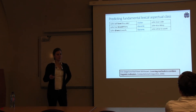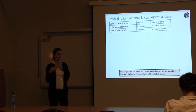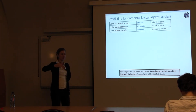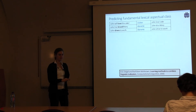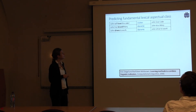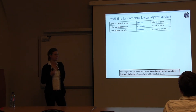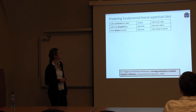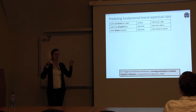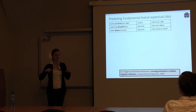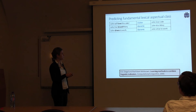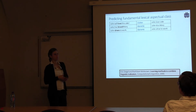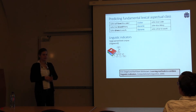Siegel and McKeown introduced the task of labeling fundamental lexical aspectual class. We predict the word-sense-level class: 'love' is stative. For dynamic cases, coercion matters — 'John has kissed Mary' with the English perfect is actually stative at the clause level, but we label 'kiss' as dynamic. Siegel and McKeown had a key idea: use linguistic indicator features extracted from a large parsed corpus.